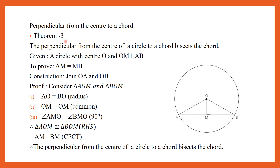Theorem number 3: The perpendicular from the center of a circle to a chord bisects the chord. We are given a circle with center O and AB as a chord. If OM is the perpendicular drawn from the center to the chord, we are going to prove that the chord is bisected, that is AM is equal to MB. For the construction, join OA and OB.